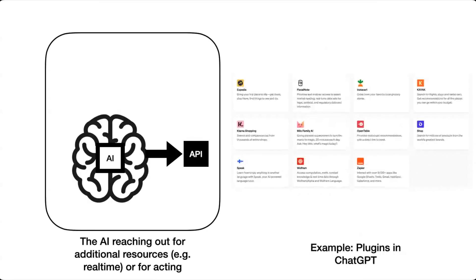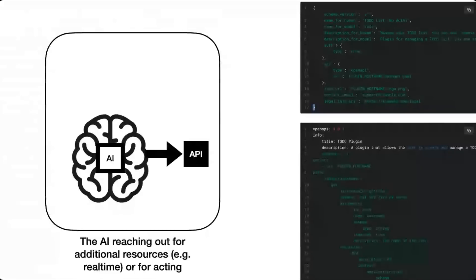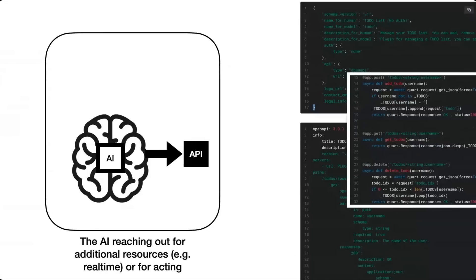Right now the AI is trained on data from 2021 and earlier — how does it get today's weather data? It needs an API that gives it current weather data. The ChatGPT plugins are actually the APIs that get called from the AI service. You can write such plugins: you have an API specification — an OpenAPI spec — of the functionality you want to expose to the AI, and that's enough to make the AI do certain things, like managing a to-do list.